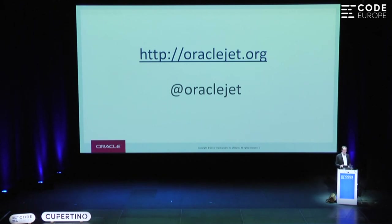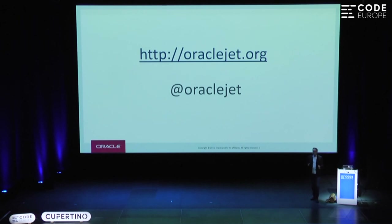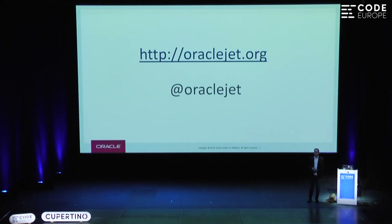So this is how Oracle applications on the front end are being written nowadays. Other technologies are also used very heavily — Apex and ADF. But for the organizations in Oracle where JavaScript is used on the front end, this is the standard way in which it's done: with Require, with Knockout, with jQuery UI widgets, with the cookbook.